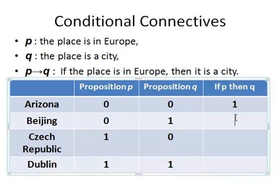Next is Beijing. Beijing is in China — it is in Asia. It is a city but it is not in Europe. This does not contradict our compound statement; the compound statement could still be true when looking at this example. So we put a one in there.